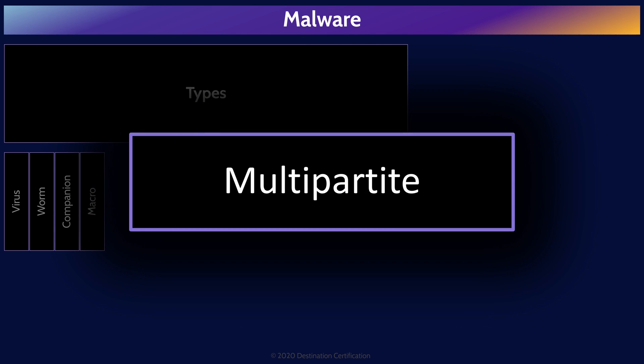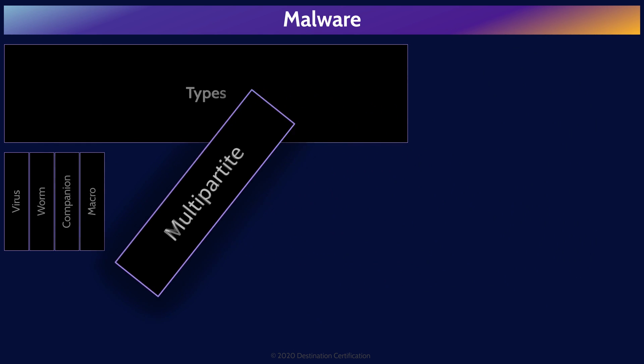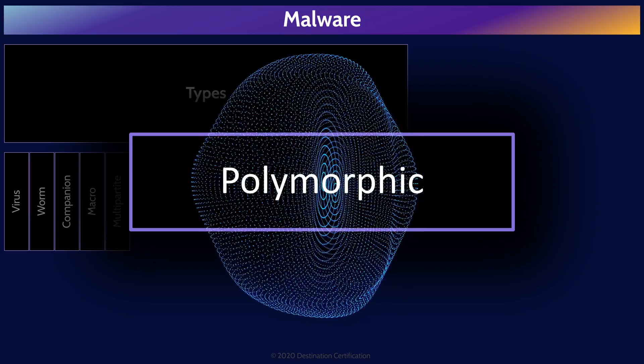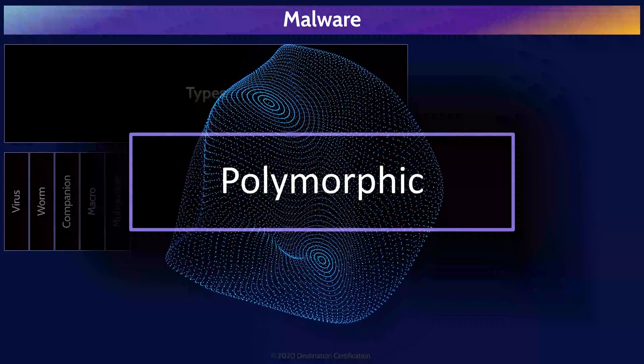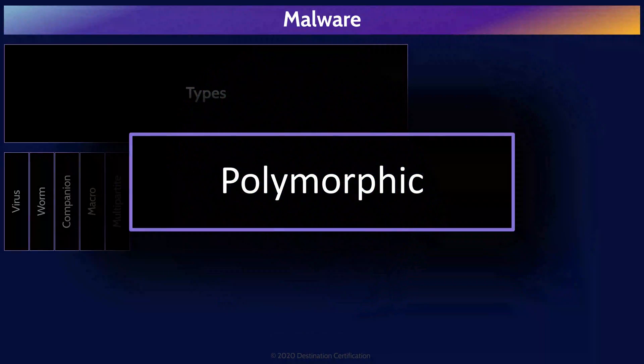Multipartite is a piece of malware that spreads in multiple different ways. Think Stuxnet as a perfect example — it first infected via a USB stick using a USB vulnerability, and then spread over the local area network using a network-based vulnerability. Polymorphic malware can change or morph characteristics about itself to evade detection, primarily by signature-based anti-malware scanners.